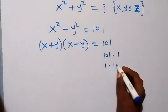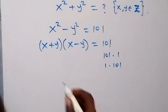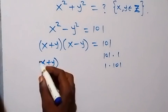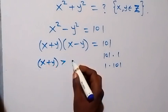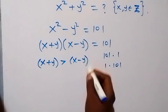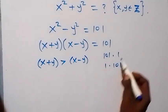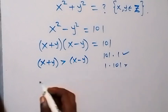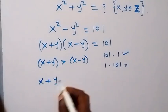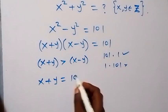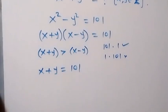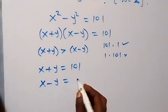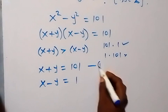as 1 times 101. In these two brackets, x+y is greater than x-y, so we take the first assignment. That means x+y = 101 and x-y = 1. This is equation 1 and this is equation 2.